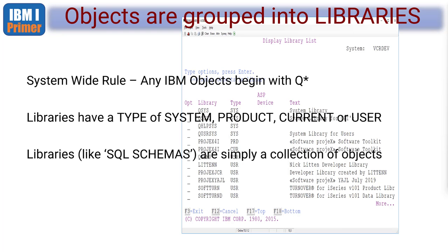Many companies have their own standards - for example, the ABC company might begin all their library names with 'ABC'. Libraries can have different types: system, product, current, or user. System is the IBM system stuff, product is a temporary library added to your library list, current is used by programmers to point to a specific library for the runtime of a job, and user is the type for general storage.